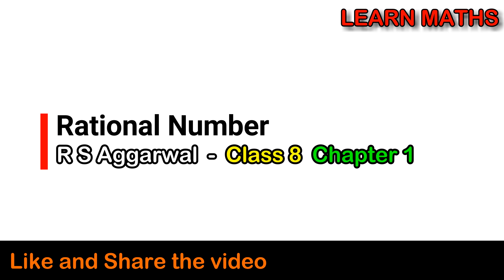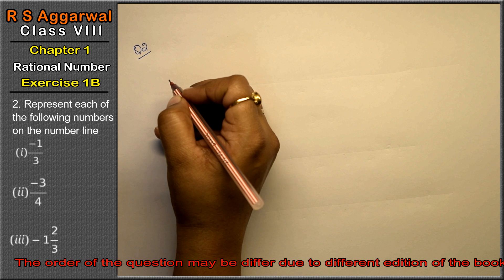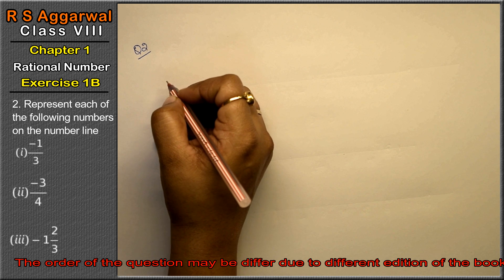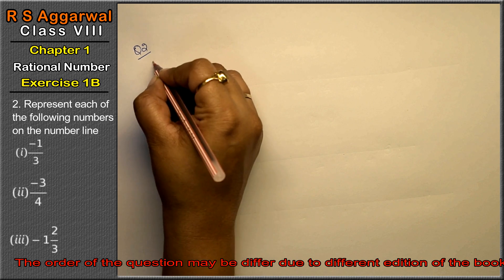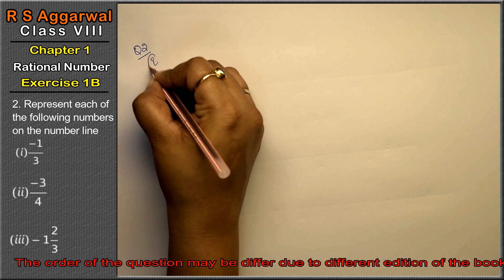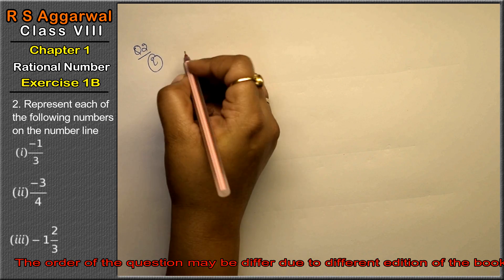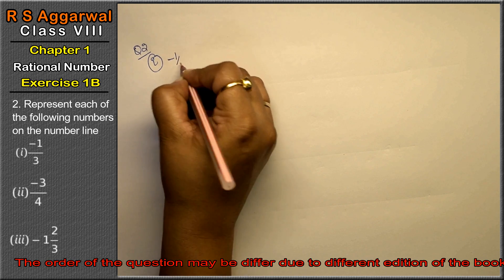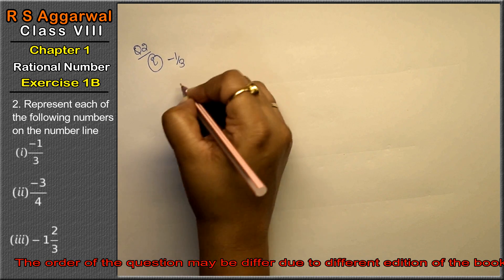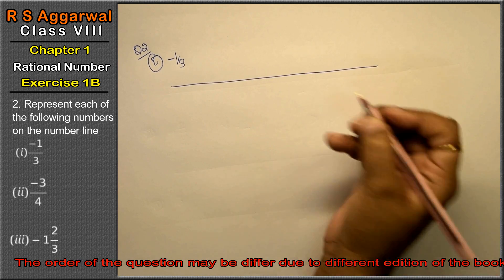Let's do question number 2 of exercise 1b - that is rational numbers. Question number 2: represent each of the following numbers on a number line. First part is minus 1 upon 3.